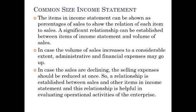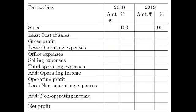This relationship is helpful in evaluating the operational activities of the enterprises and helps with interpretation. The pro forma format has sales equivalent to 100, and all remaining items are calculated as a percentage against sales.